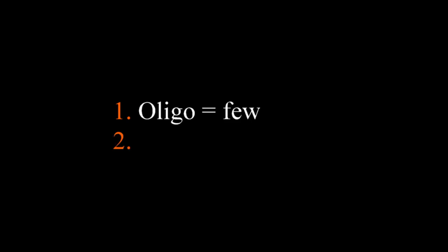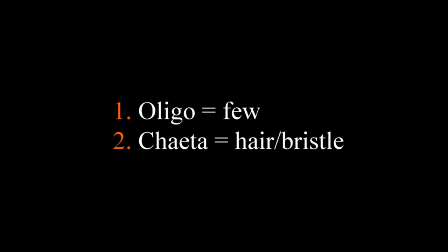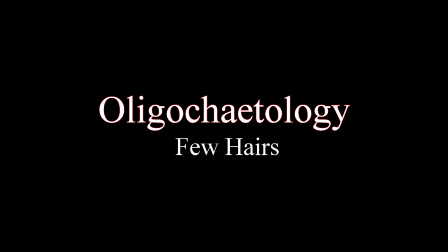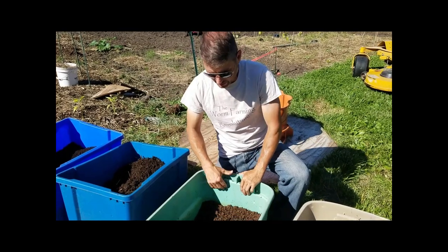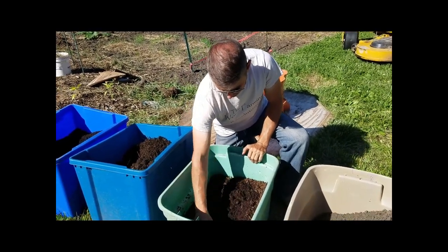Number one: the word "oligo" is New Latin, meaning few. Number two: "chaeta" is New Latin for hair or bristle. Put them both together and now you have "few hairs." So oligochaetology is the study of a few hairs — or the study of the back of my head. Just joking. Pronunciation: oligochaetology — where the sound still doesn't have anything to do with the word "worm," but it's the study of an animal that has very few hairs. Their hairs, called chaetae, are so small that some take a microscope to see them.